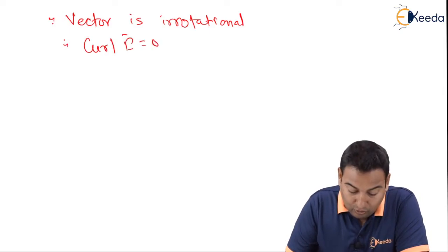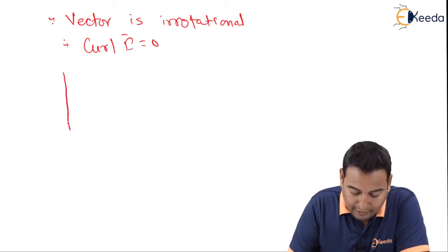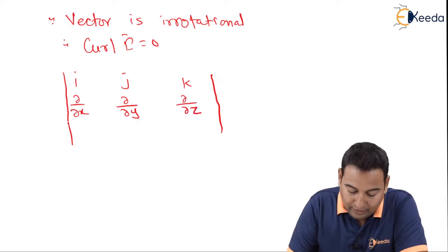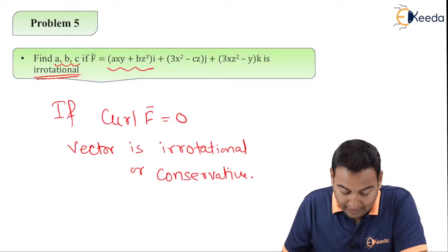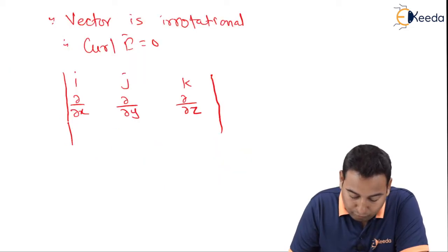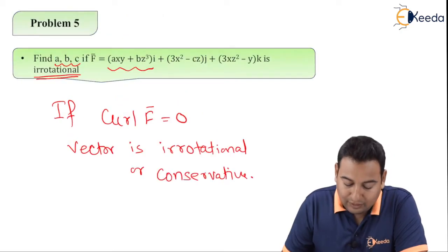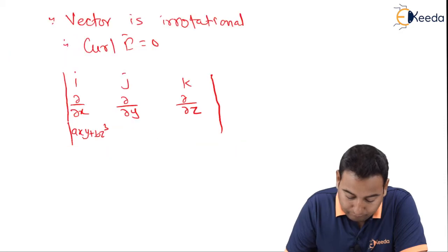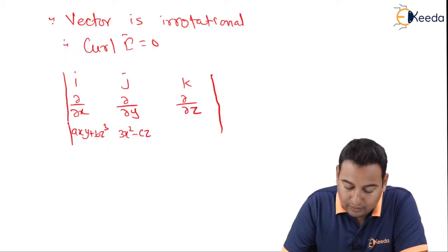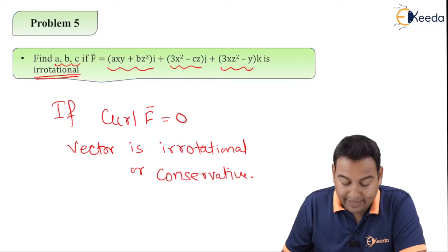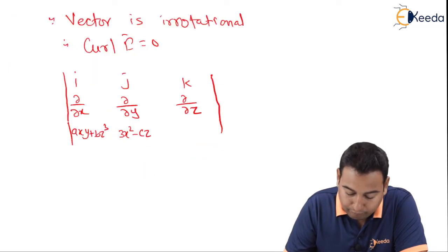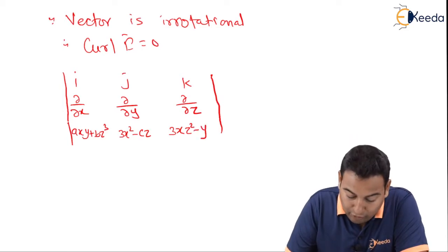The curl formula is: i, j, k in the first row; del by del x, del by del y, del by del z in the second row. In the third row, with i the term is axy plus bz cubed, with j we have 3x squared minus cz, and with k we have 3x squared minus y.